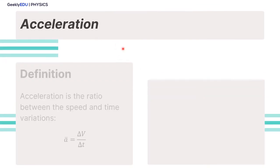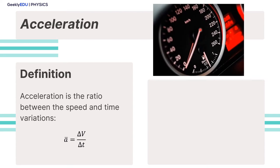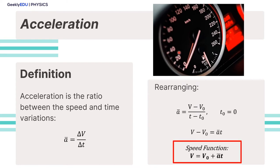Now talking about acceleration: acceleration is the ratio between the speed and time variations. If you think again about the speedometer in your car, imagine the acceleration as how fast the pointer goes up and down. If you rearrange this equation, setting initial time as 0 again, we reach the speed function: the speed right now equals the initial velocity plus the acceleration times time.